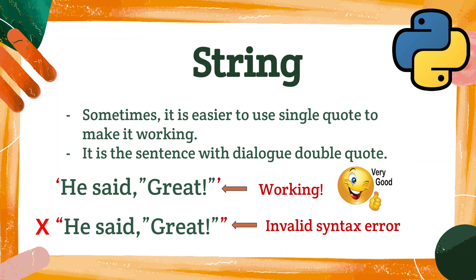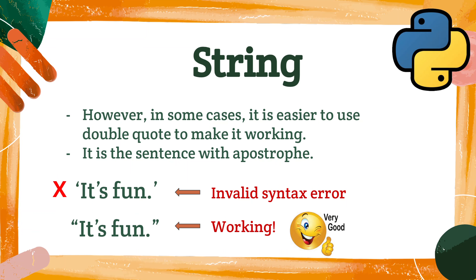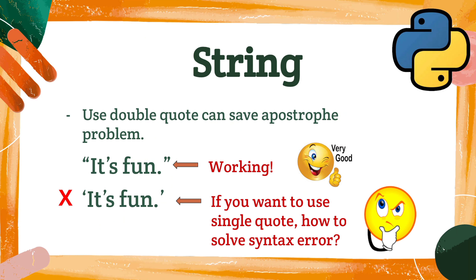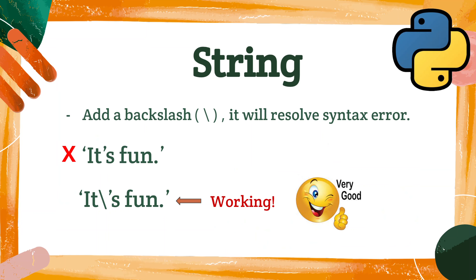Sometimes it is easier to use single quotes, such as a sentence with dialogue double quotes. For this case, there are four double quotes. Python will consider the second double quote as the ending of the string, so using double quotes in this case will cause a syntax error. However, in some other cases, using double quotes will be easier. For example, if the sentence has an apostrophe, using single quotes outside won't work, because the second single quote will be considered the ending quote, causing a syntax error.